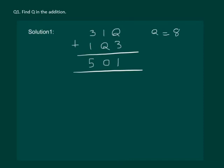Let us check. 3 1 8 plus 1 8 3. Let us add it. We will get 11. This comes out to be 10 and 5. Hence Q is equal to 8 is the required answer.